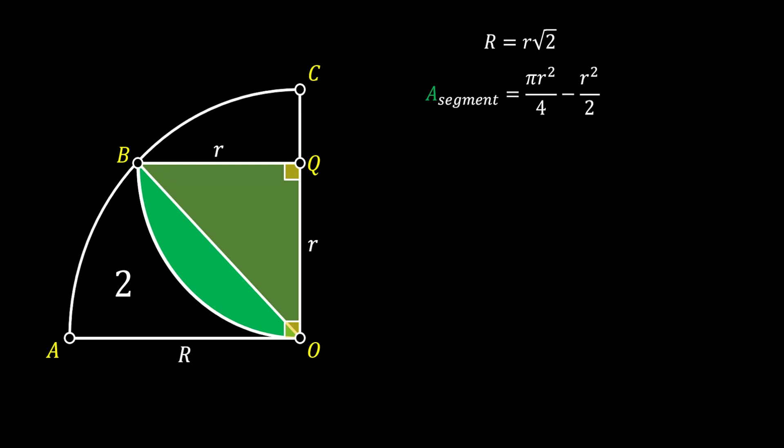Alright, so now let's have a look at our triangle BQO once more. Since this is an isosceles right angle triangle, this means that the acute angle of this triangle must be equal to 45 degrees. Now since the overall angle at the point O is 90 degree angle, this means that the remaining angle BOA must be 45 degrees as well. And we are going to use that fact.